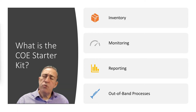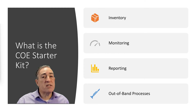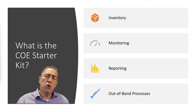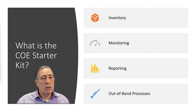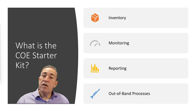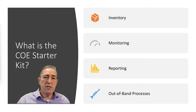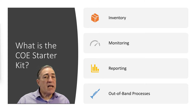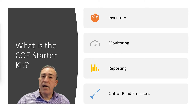How do you keep track of all the environments, the users, the apps, the flows, the processes that are running? That's what the COE Starter Kit is for. The COE Starter Kit is maintained on GitHub and is available to any enterprise who wants to download, install, maintain, and update a set of tools and processes that help them manage the Power Platform environment.